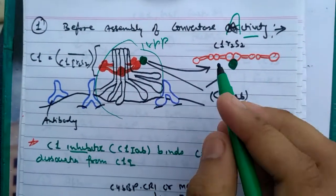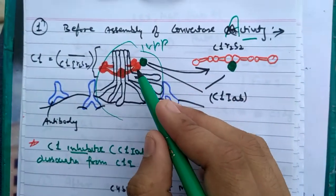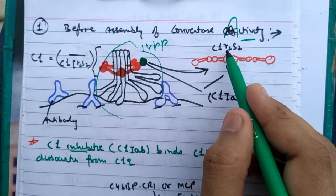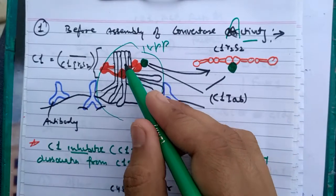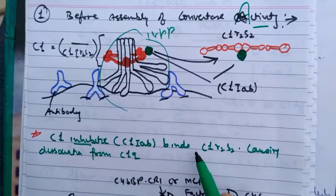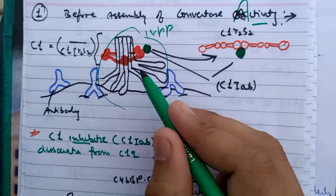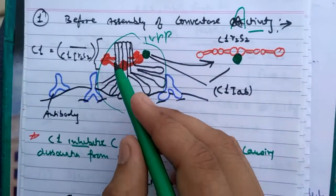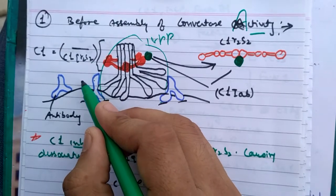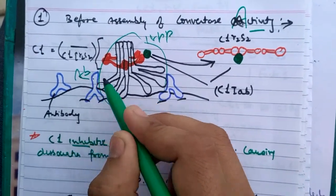What does it do? When it attaches with the C1R2S2, it dissociates it from the C1Q. When it is detached, its assembly with the FC region of antibody is inhibited.